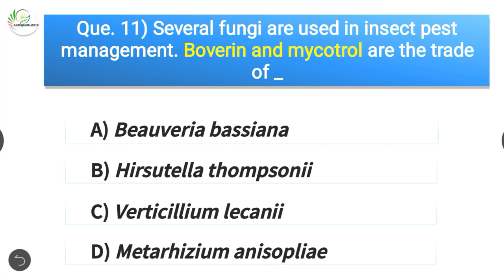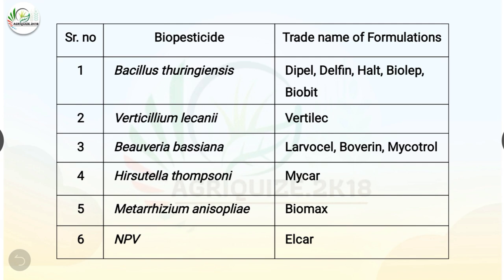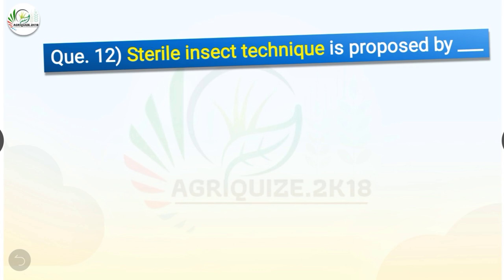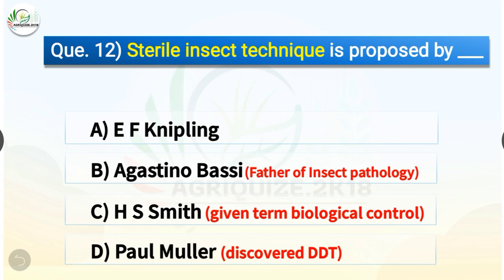Let's know more about trade names of biopesticide formulations. For Bacillus thuringiensis: Dipel, Delphin, Halt, Biolep, and Biobit. For Verticillium lecanii: Vertalec. For Beauveria bassiana: Larvocell, Boverin, and Mycotrol. For Hirsutella thompsonii: Mycar. For Metarhizium anisopliae: Biomax. For NPV: Elcar.